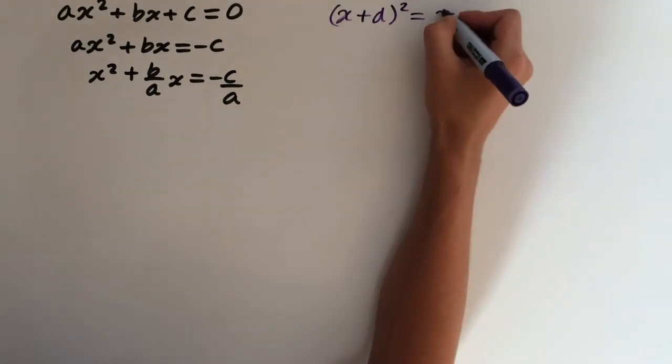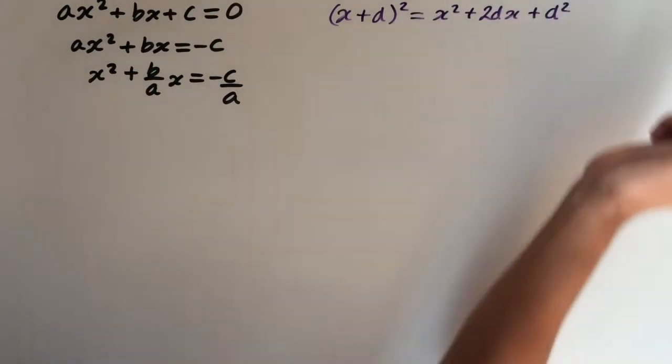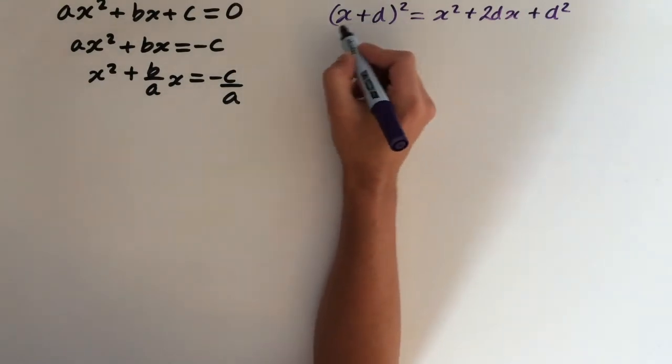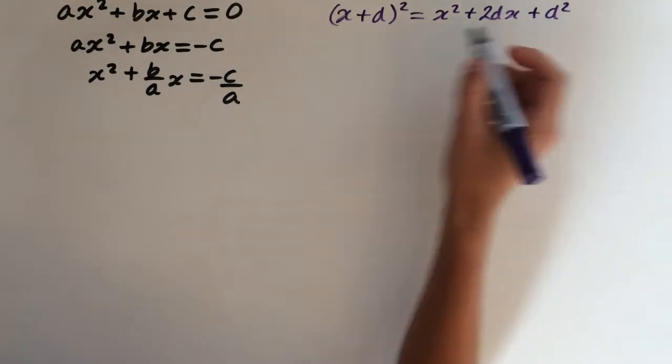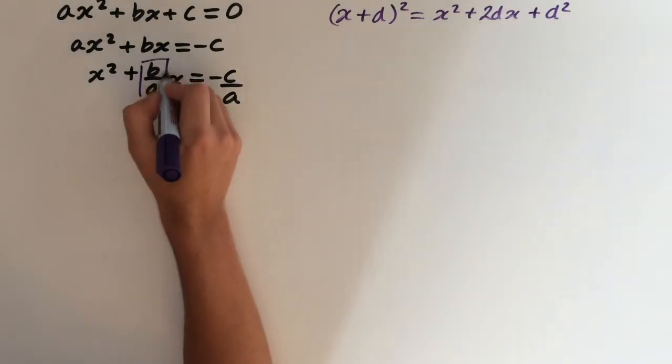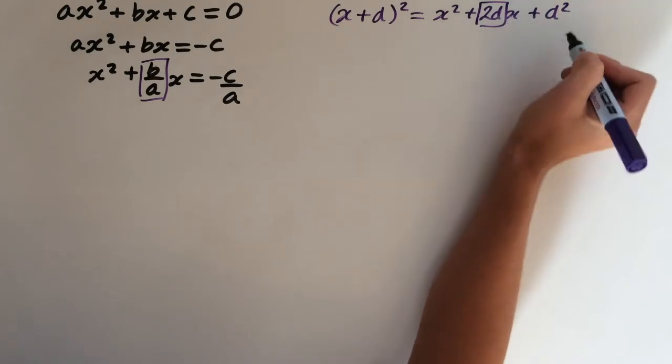This gives us x² plus 2dx plus d². Now this is the complete square form, this is what we want. But we've got something looking a bit like this. So if we look at the coefficient of x and equate them, we can find out the value of d.